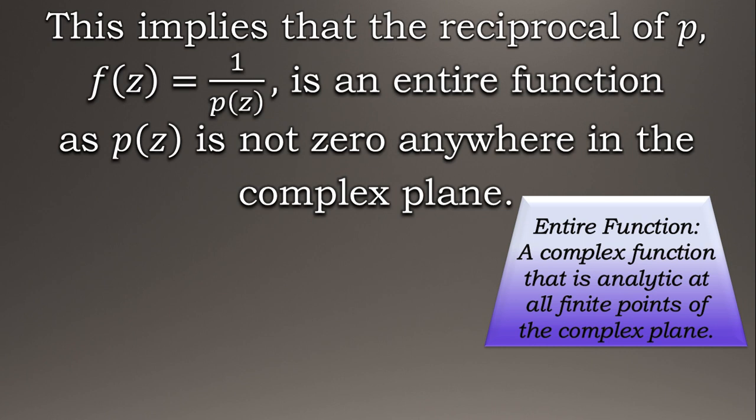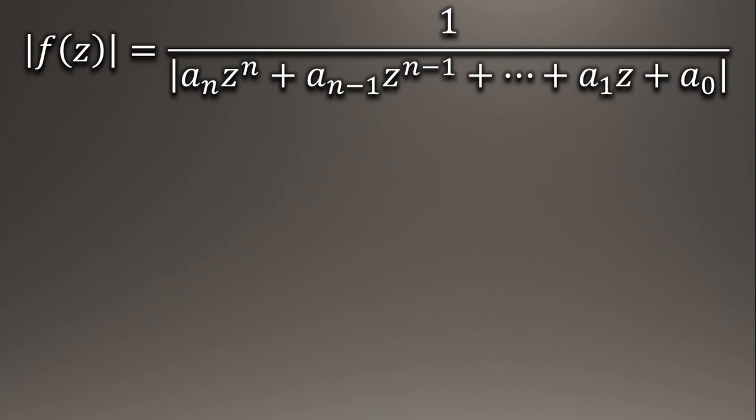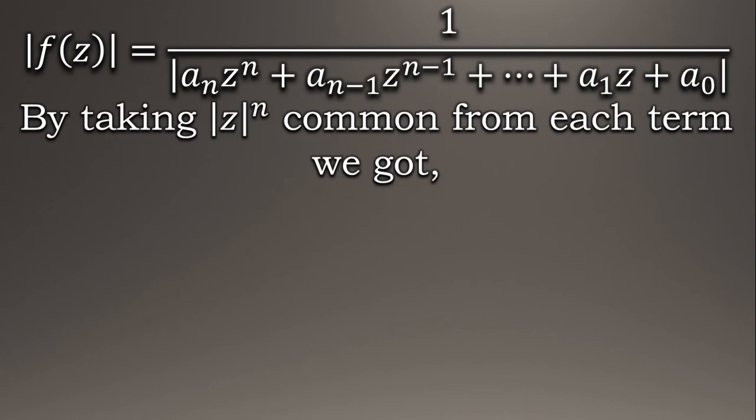So we have |f(z)| equals 1 by |p(z)|. We took mod here because we will apply the definition of a continuous function on it later. Now we are taking |z|^n common from each term of |f(z)|.